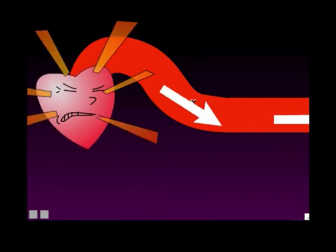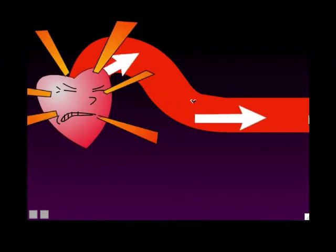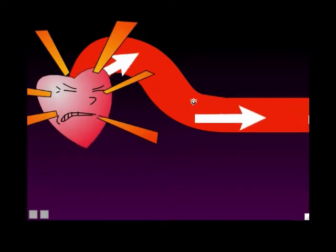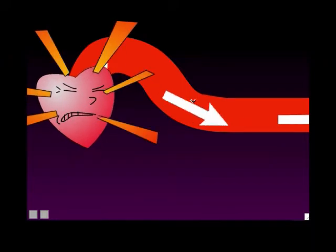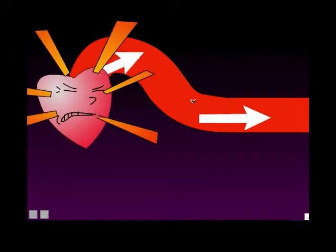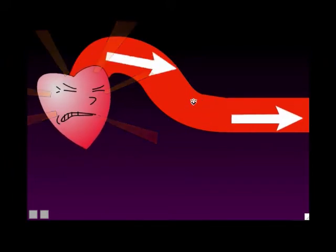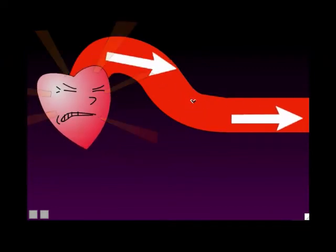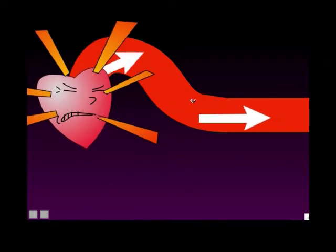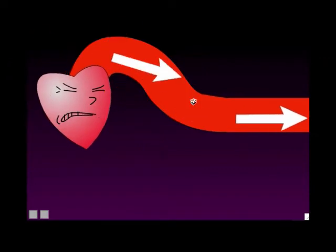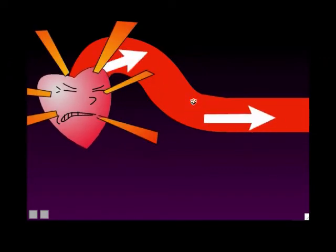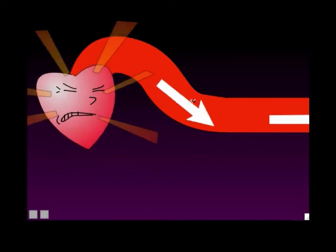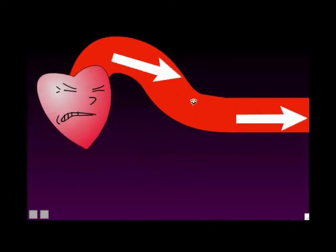If a person has too high a blood pressure, doctors can give them medicines called diuretics, which make the person urinate a lot. The kidneys make urine from the blood, so if a person is urinating a lot, their kidneys are removing extra water from the blood, lowering the total blood volume. That lowers peripheral resistance, which lowers blood pressure.